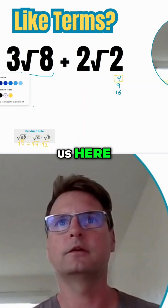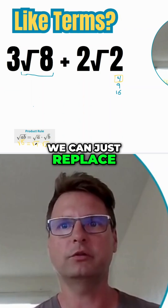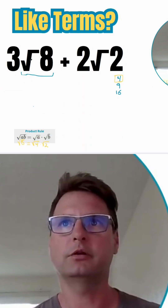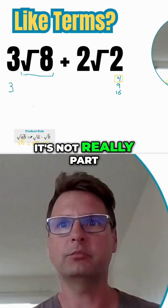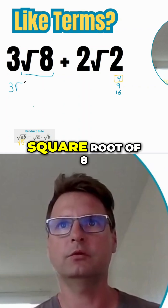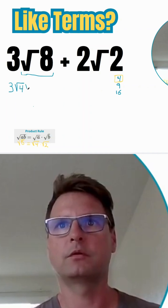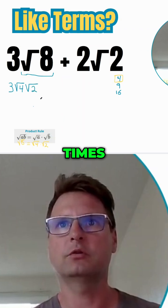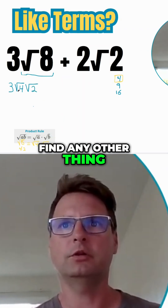So how does that help us? Well, if something is equal to something else, we can just replace it with what it's equal to. So let's do that — square root of eight, let's bring down that three, it's not really part of this product rule thing. Then let's just replace square root of eight with what it's equal to: square root of four times square root of two.